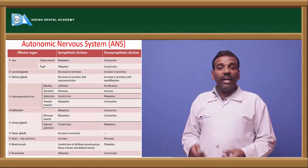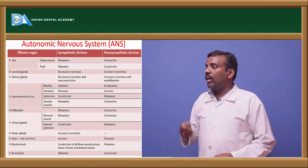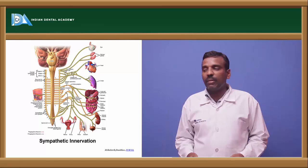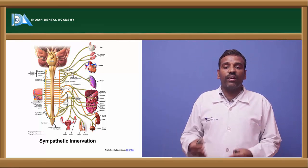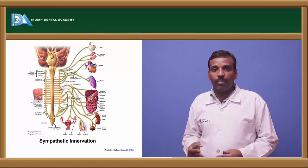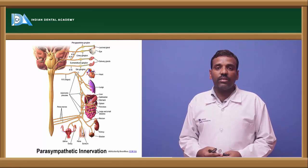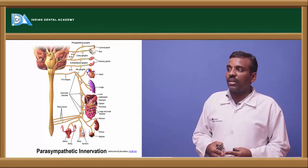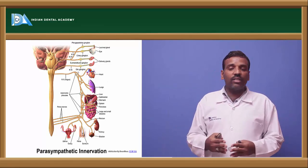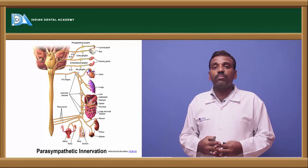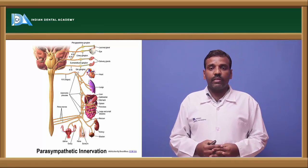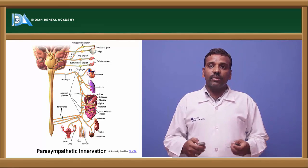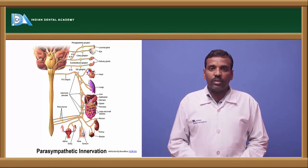Blood vessels — constriction by sympathetic, dilation by parasympathetic. Bronchioles — dilation by sympathetic, constriction by parasympathetic. The parasympathetic nervous system arises from the cranial and sacral segments; the sympathetic nervous system arises from the thoracic and lumbar segments. This concludes the overview of the nervous system including the central nervous system, peripheral nervous system, and autonomic nervous system.